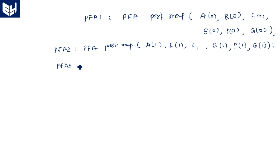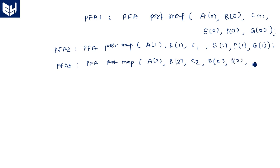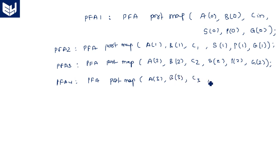The third partial full adder port maps: A(2), B(2), C2, S(2), P(2), G(2). The fourth partial full adder port maps: A(3), B(3), C3, S(3), P(3), G(3). Now we have C1, C2, C3 as outputs of the partial full adders, along with G(0), P(0) and the other generate and propagate signals, which we use for generating the final carries and C_out.